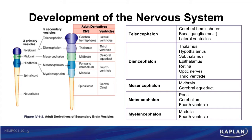These vesicles differentiate further into five secondary vesicles: the telencephalon, diencephalon, mesencephalon, metencephalon, and the myelencephalon.